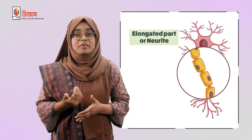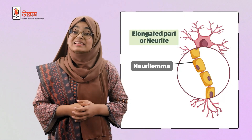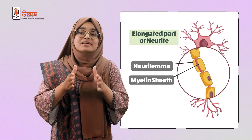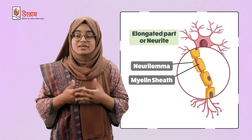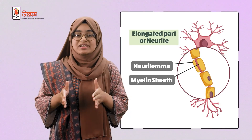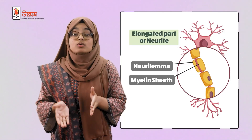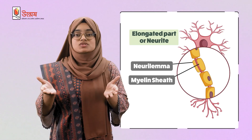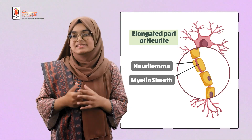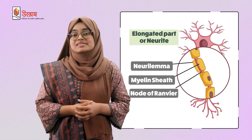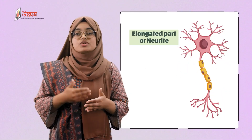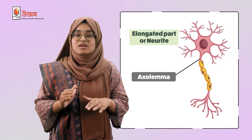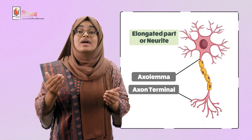A thin layer or membrane that encloses the axon is called the neurilemma. There is a fatty layer between the neurilemma and the axon called the myelin sheath. The myelin sheath is not continuous — it is interrupted at regular intervals. There is a direct connection between the neurilemma and the axon at these interrupted parts, and this unmyelinated part is known as the node of Ranvier. The membrane which covers the main axis of the axon is called the axolemma, and the end part of the axon is divided into axon terminals.